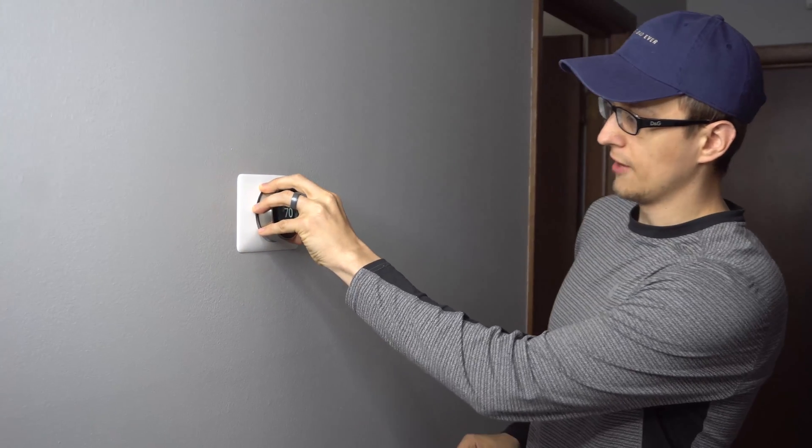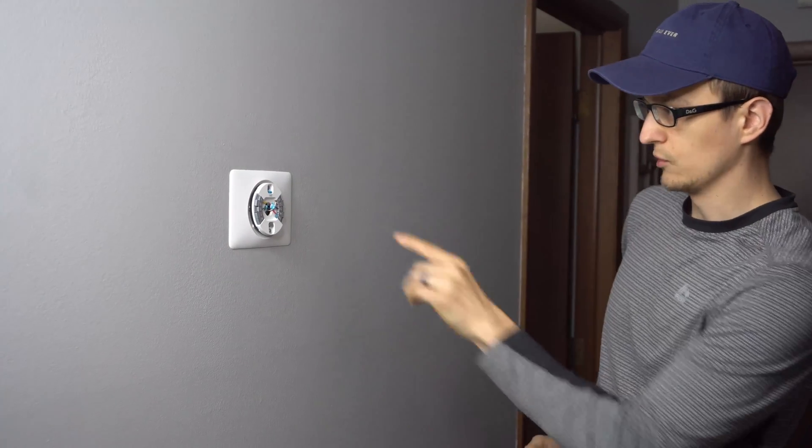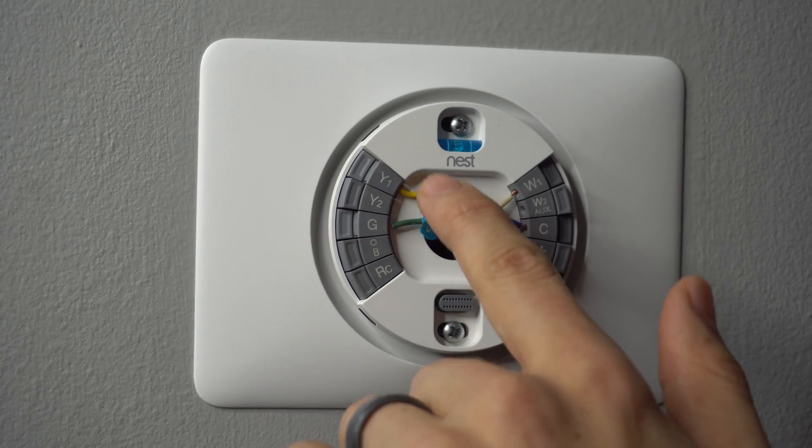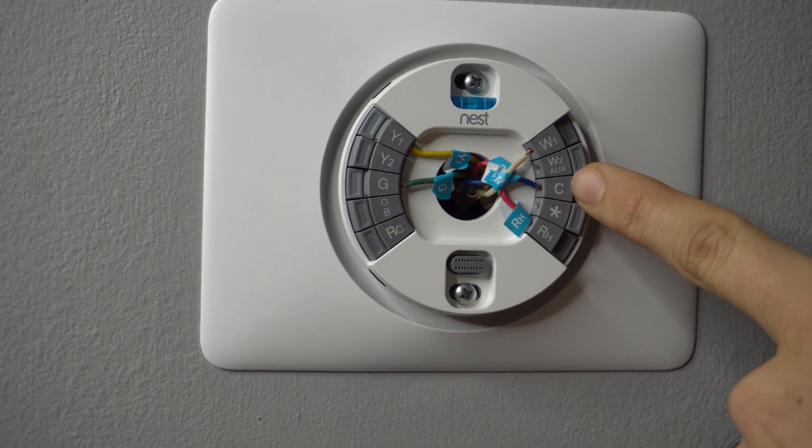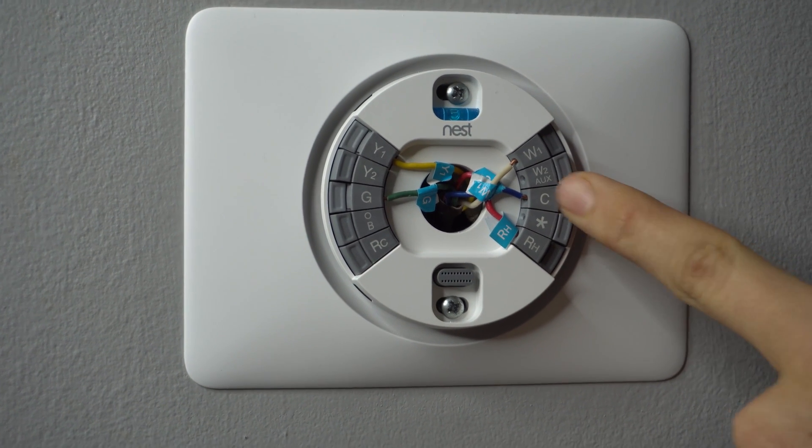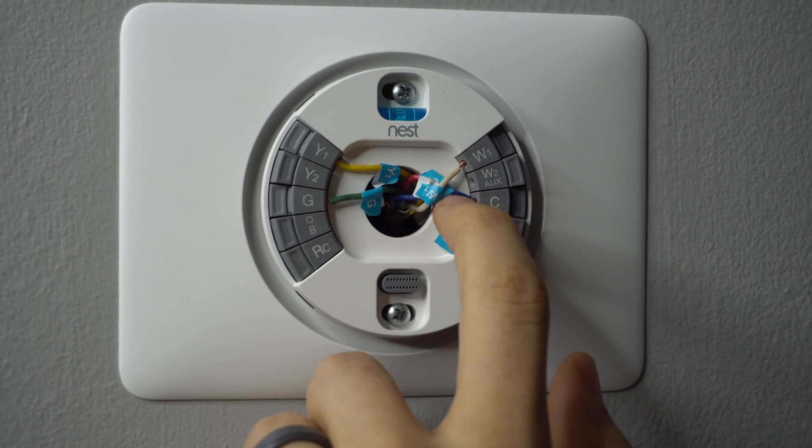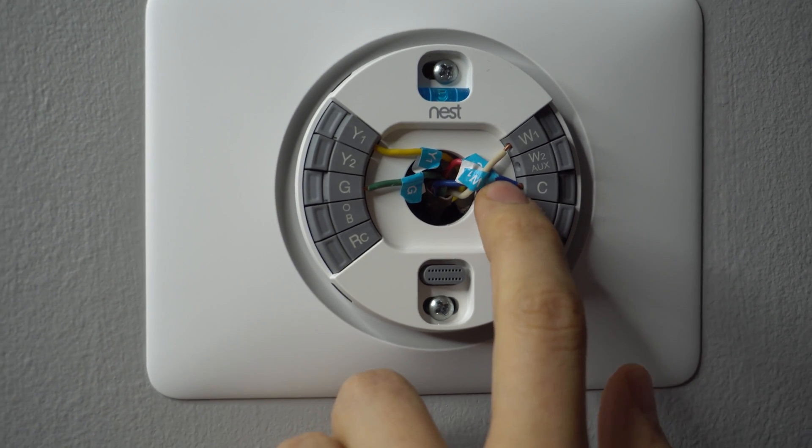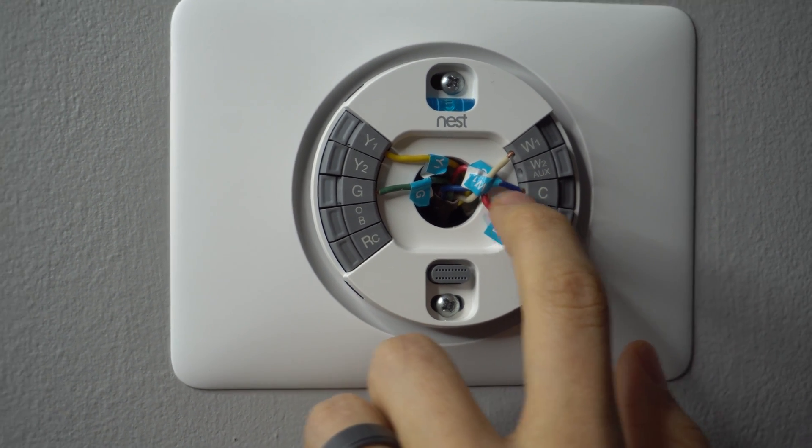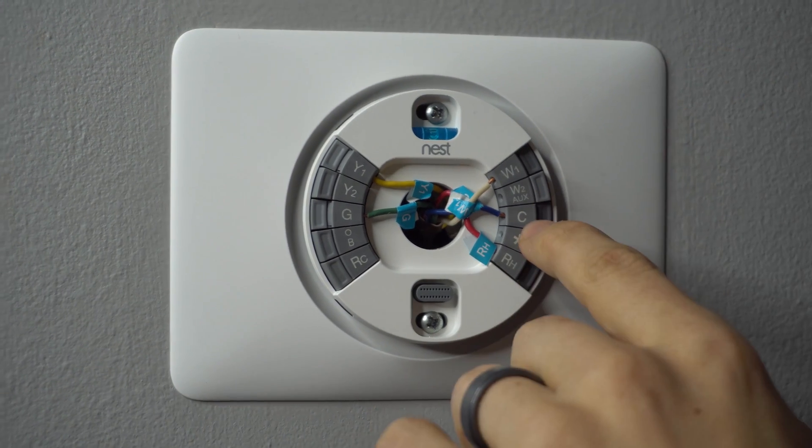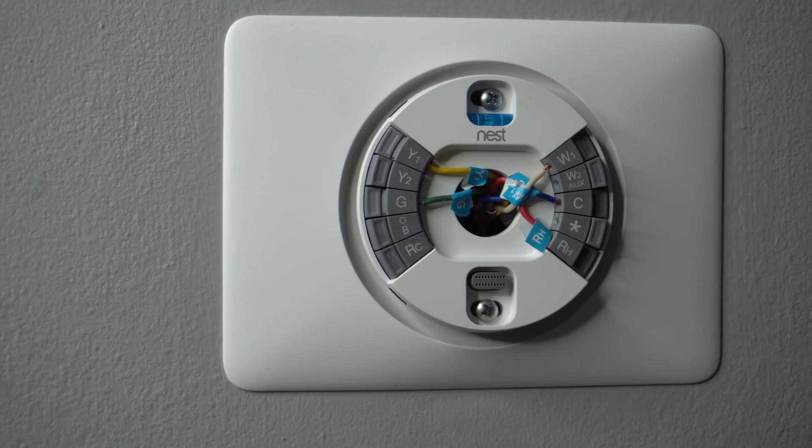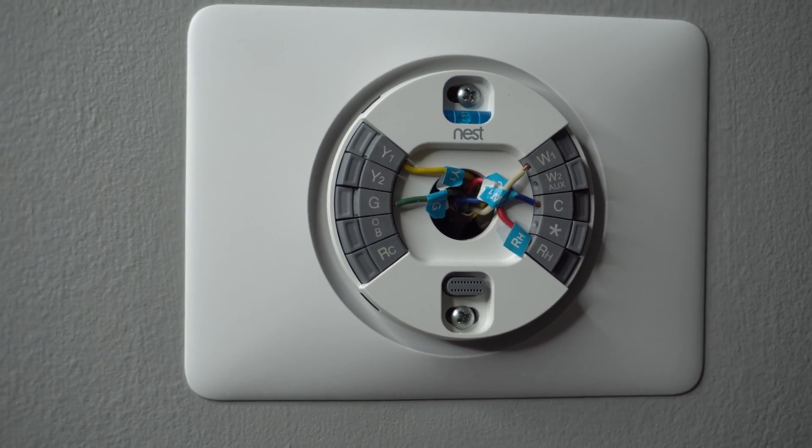So if you take the Nest thermostat off the wall and look at your terminals right here, all our terminals are labeled on both sides. So the C or the common is on the right side, and mine is hooked up. Some houses I go to where they're having problems with their Nest, chances are they don't have that C wire hooked up. So if you take your Nest thermostat off the wall and you don't have a C wire, you definitely want to take care of that, and there's a couple of things you can do to fix that.